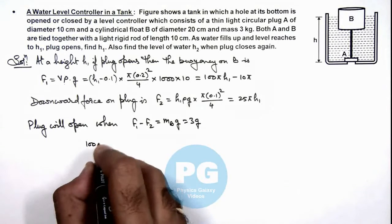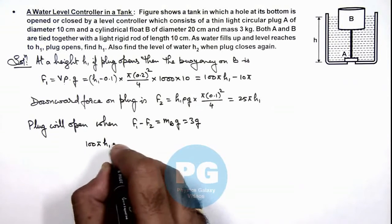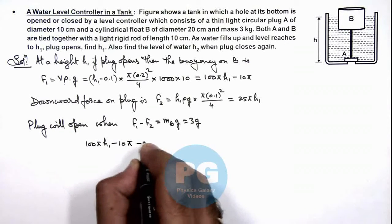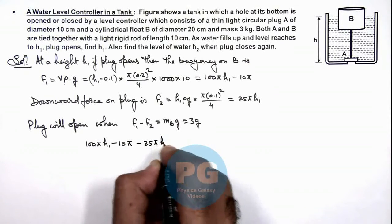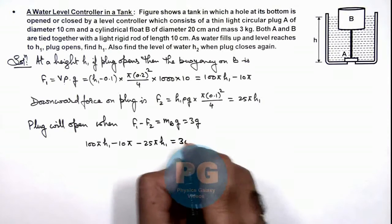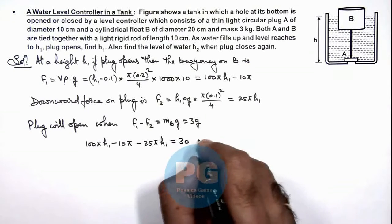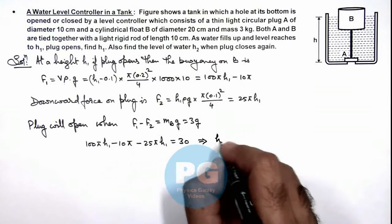100π h₁ minus 10π minus 25π h₁ equals 30. Here I have substituted g as 10.